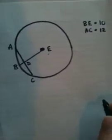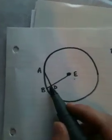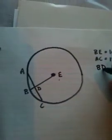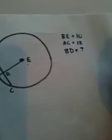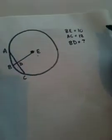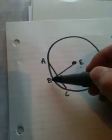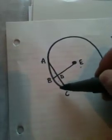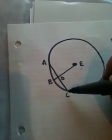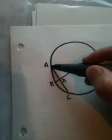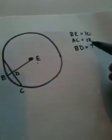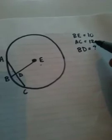And what they're going to be asking you to find is this little tiny piece here, this BD. So what do we know? Well, we know that we have A, B, and C are all points on the outside of the circle. And we know that we have a chord here, AC, and that it's going to be 12 units long.